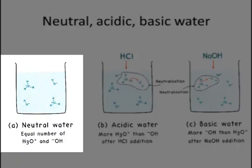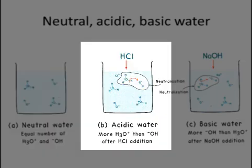In the case of neutral water, there are just as many hydronium ions as there are hydroxyl ions. Therefore, as a whole, the pH of this substance is 7 — it is neutral, with equal numbers of hydronium and hydroxyl ions.